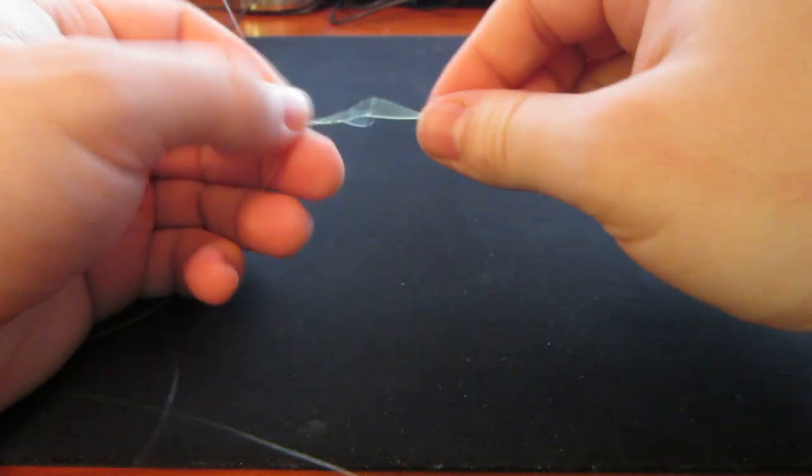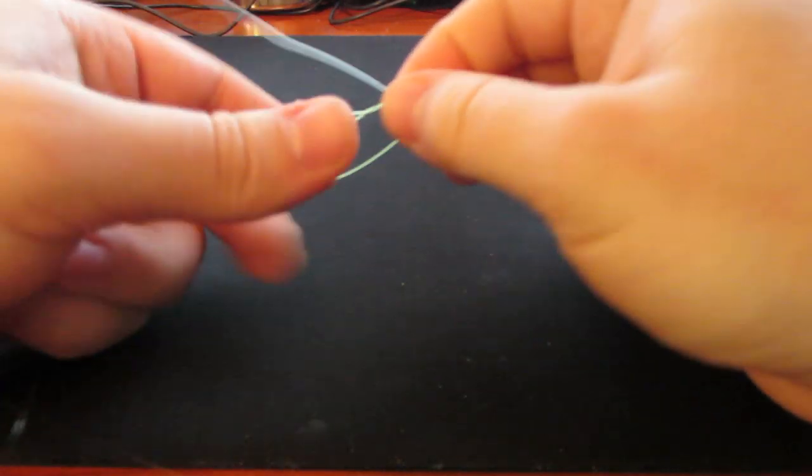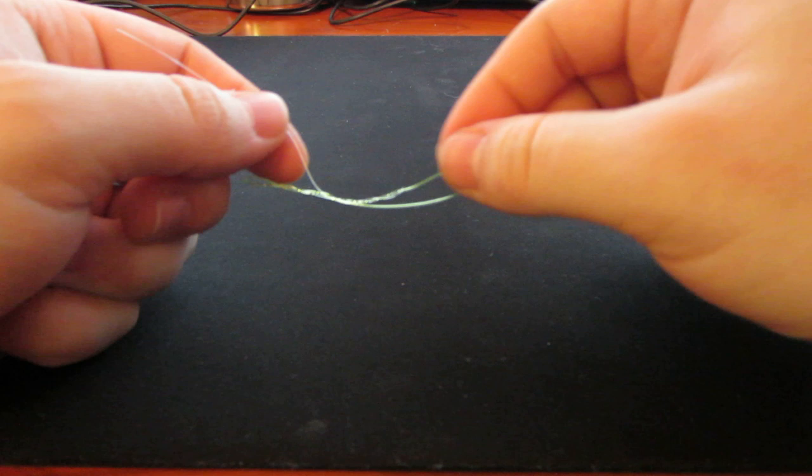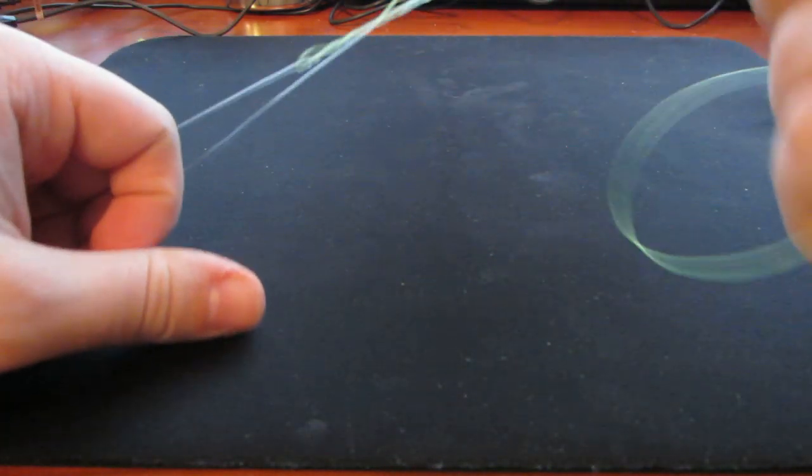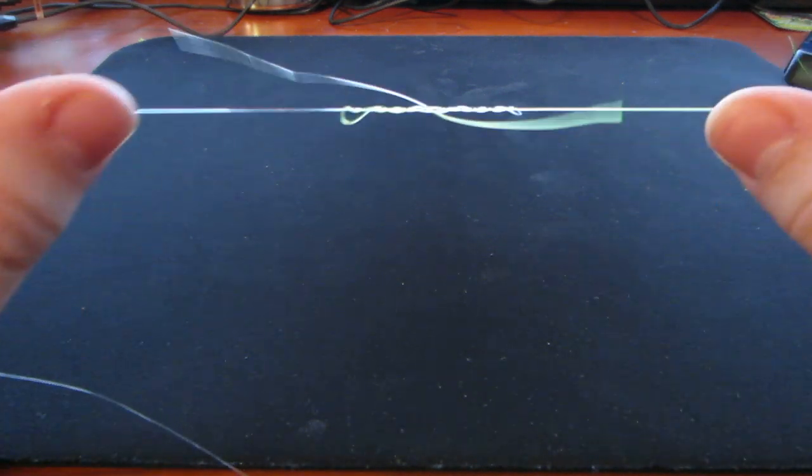Switch hands. Do a little bit on that side. Kind of work it toward the middle. You get to a point where you can let go of the middle and just grab the two sides and slowly work the knot together.